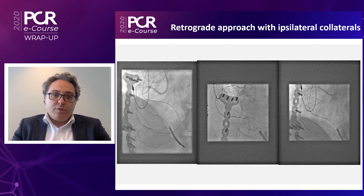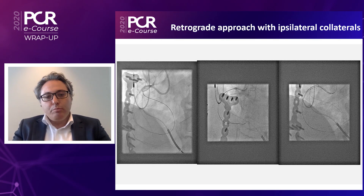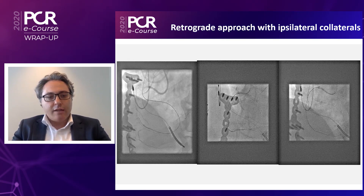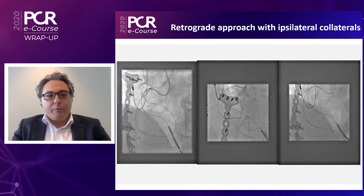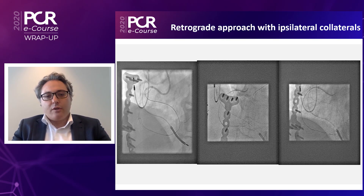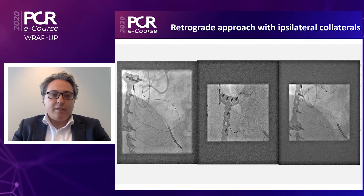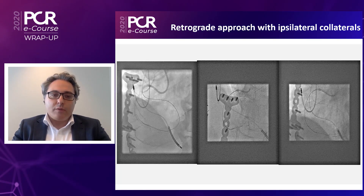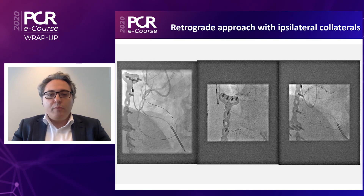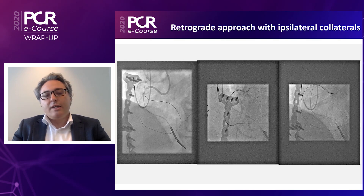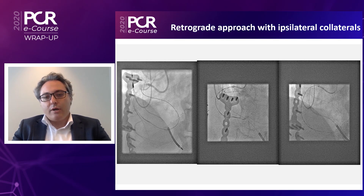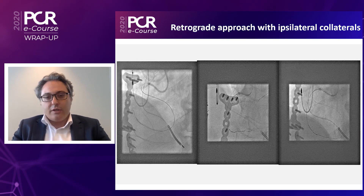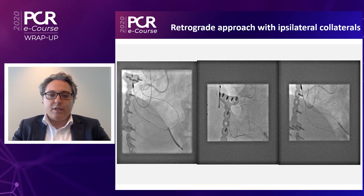We made a full loop from the ipsilateral epicardial collateral and went up to the distal right. We made the dissection retrogradely — we already had that dissection from proximally. So we performed a reverse CART technique and ended with our retrograde wire in the guiding catheter.